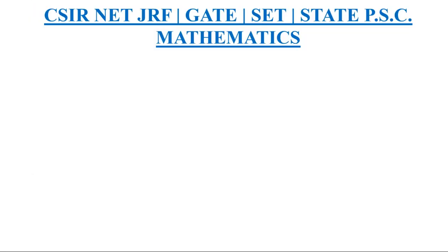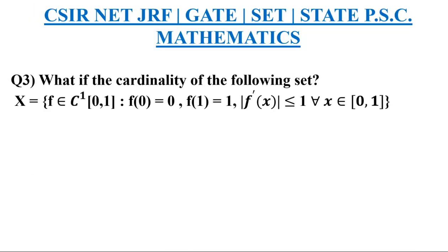Moving on to the question. The question is: what is the cardinality of the following set? The set is given as x where f belongs to the set of continuous functions, differentiable ones on the closed interval [0,1], and f(0) = 0 as well as f(1) = 1, and f'(x) ≤ 1 for all x belonging to closed interval [0,1]. The options are a) 1, b) 2, c) 3, and d) 4.